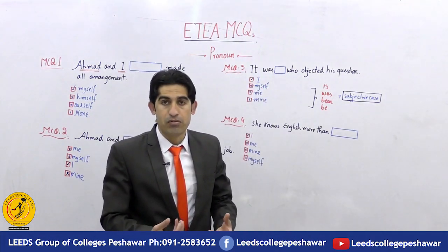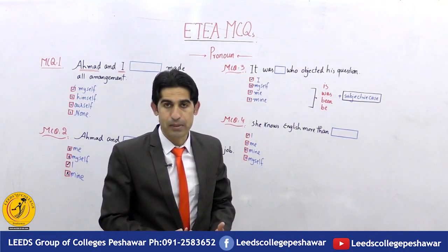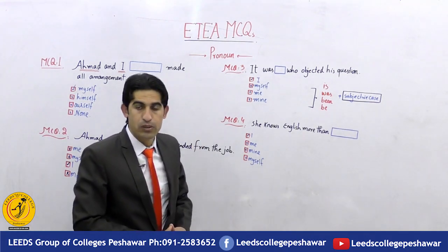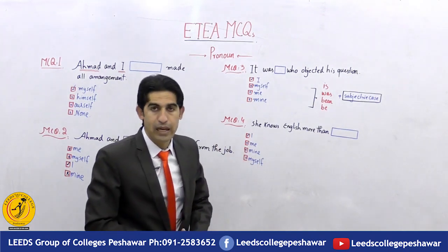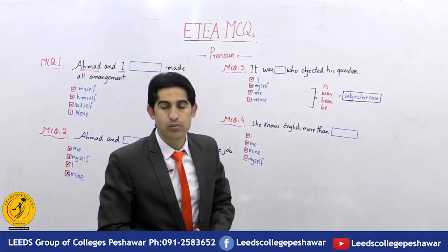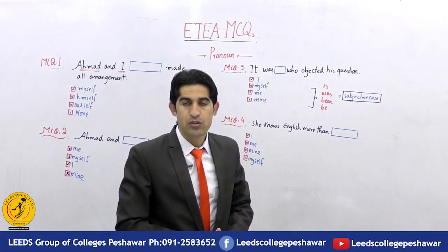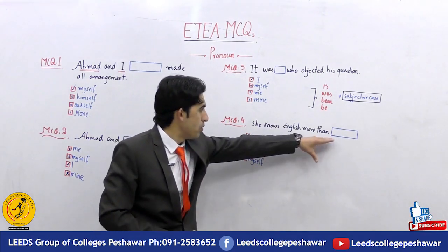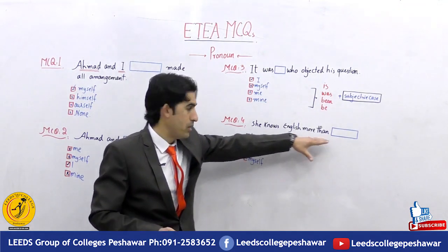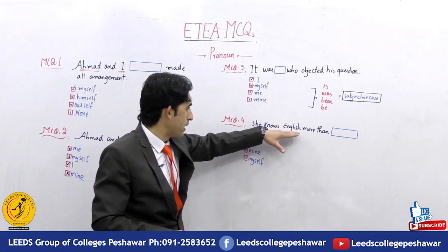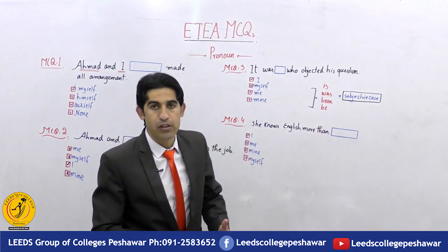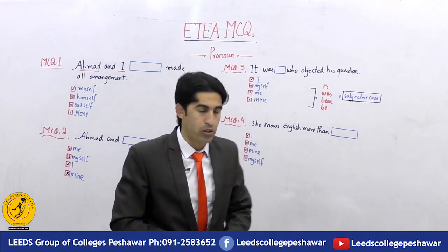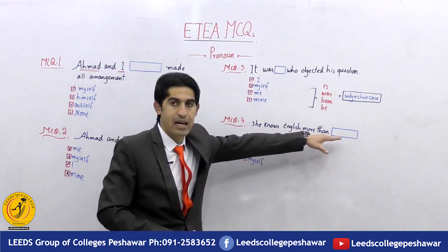To summarize: if we have linking verbs including is, was, been, and be, they will take the subjective case of the pronoun. Now MCQ number four: 'She knows English more than ___.' This sentence has an important component — the conjunction 'than' followed by a reduced clause. The complete sentence is: 'She knows English more than I know.' We have dropped the verb 'know,' and before it we use the subjective case of the pronoun. So the correct answer is 'I'.